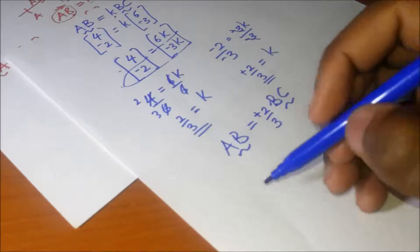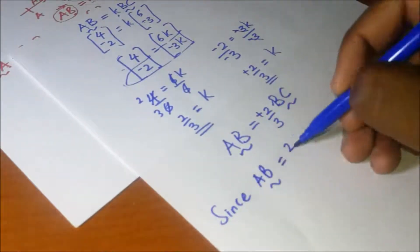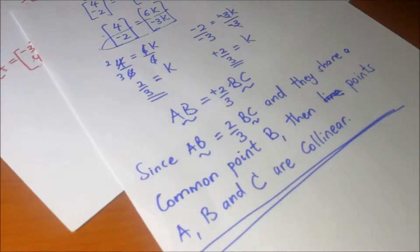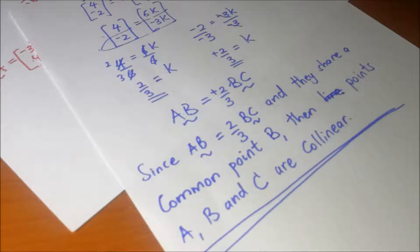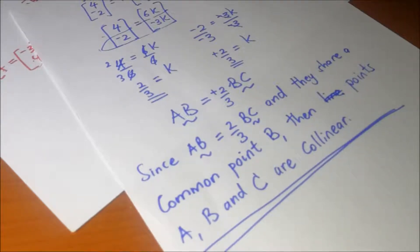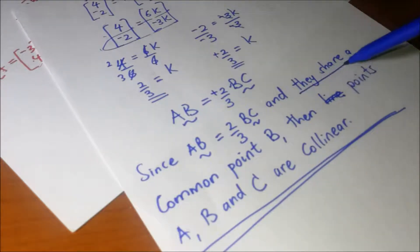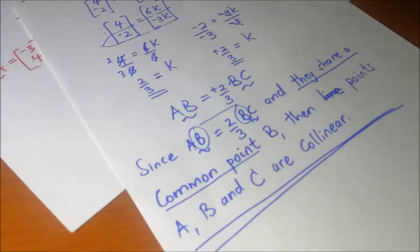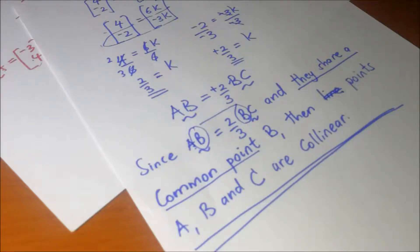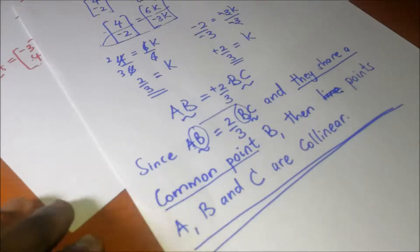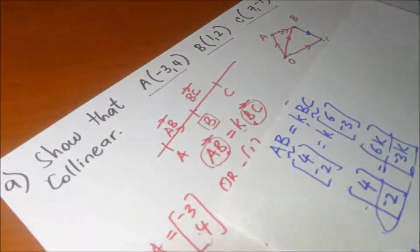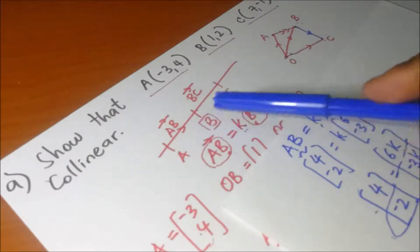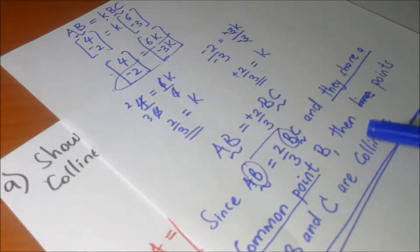After arriving at that, we make the conclusion. You realize that the conclusion is closely related to what we did when proving lines are parallel — the only difference is that here we must also state that AB and BC share a common point, which in this case is point B.